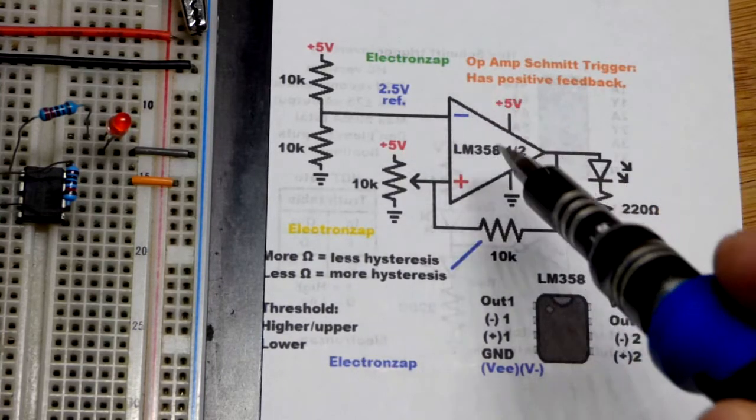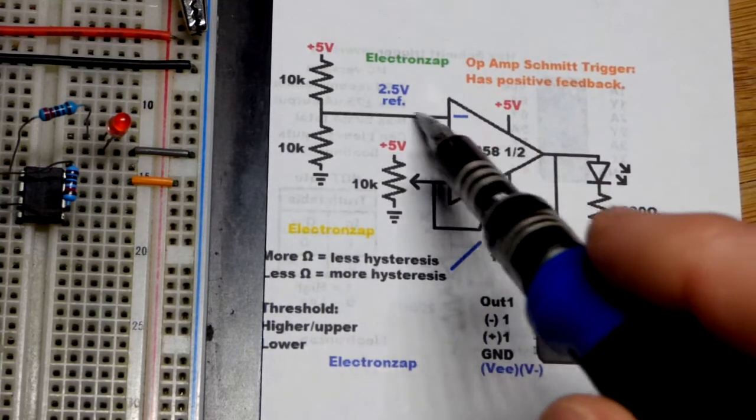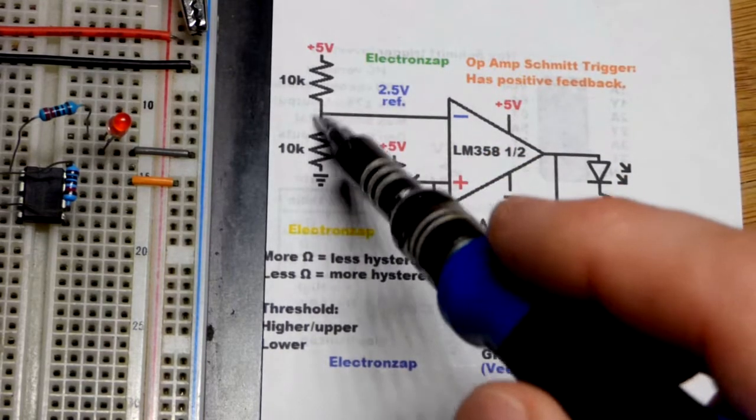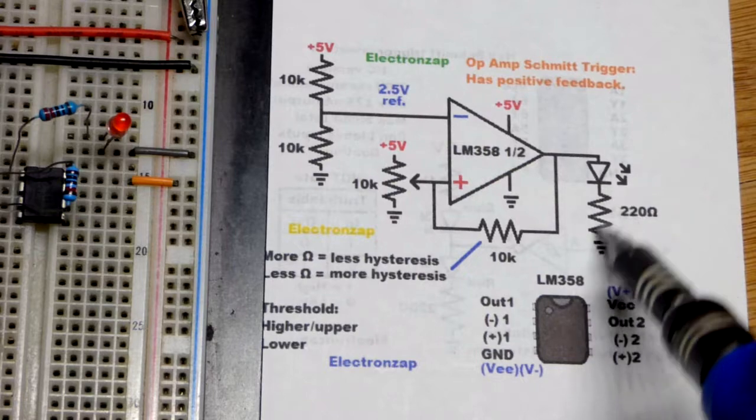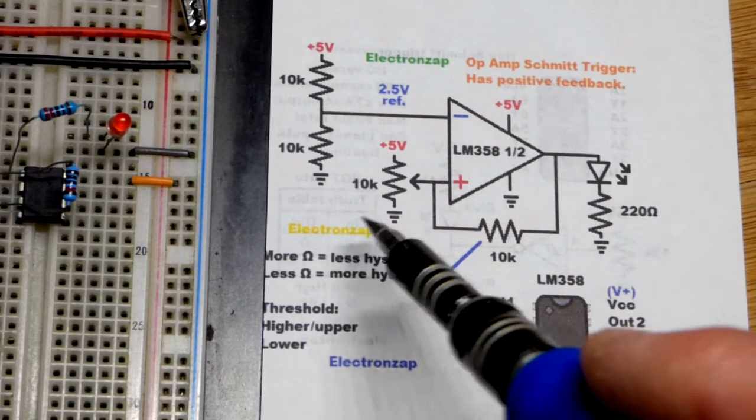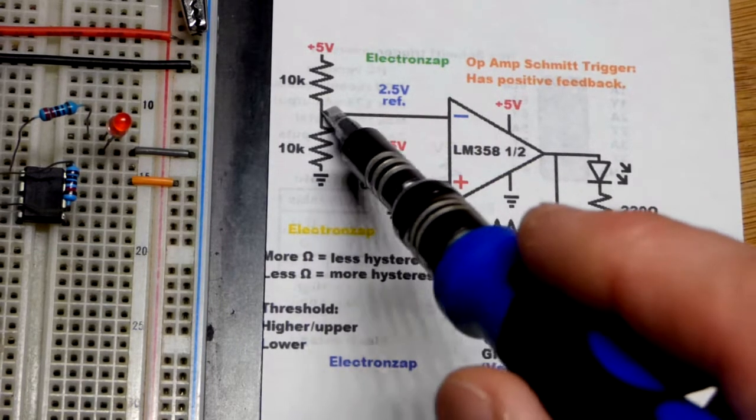So coming to the schematic diagram, we see the op-amp wired as a comparator. We got a reference voltage. We got equal value. All the resistances are 10 kilohm in this video, other than the current limiting resistor for the LED. So it makes things easier.